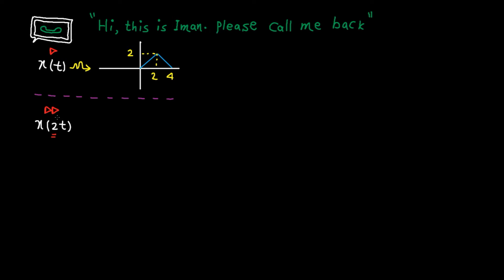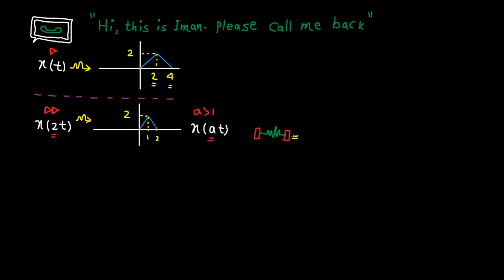x(2t) means we play the signal at double speed. So if the original signal is "Hi, this is Iman, please call me back," when you play it at double speed it becomes faster. As you can hear, it takes less time to finish because the speed is double and I'm talking faster. This means the signal gets compressed in the time domain. The compression factor in this example is 2. All we need to do is compress the signal by 2, so 2 on the time axis goes to 1, and 4 goes to 2. The amplitude stays the same. In general, x(at) when a is greater than 1 means we compress the signal in the time direction by a factor of a.